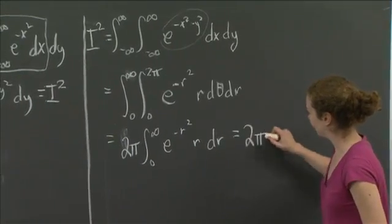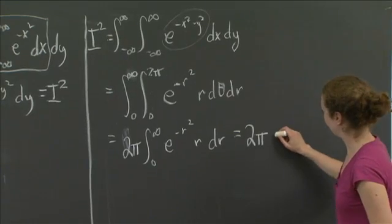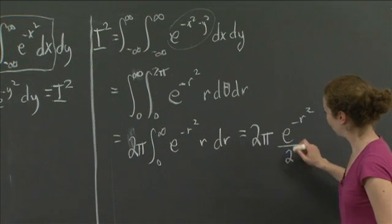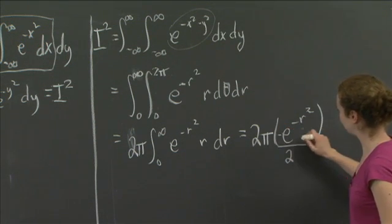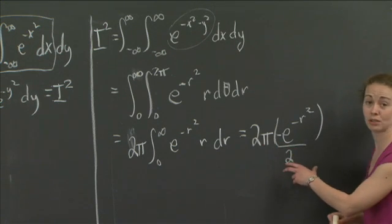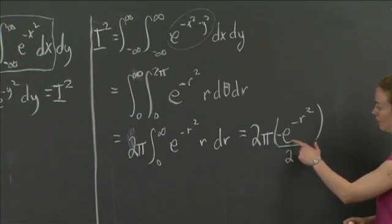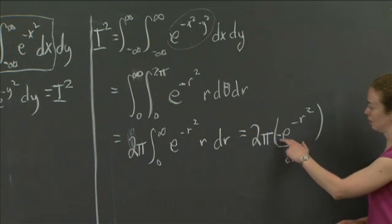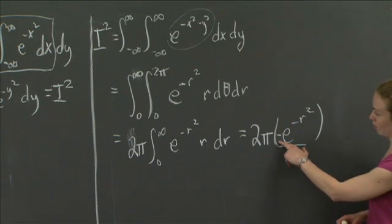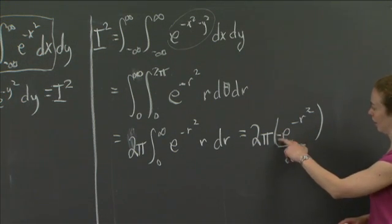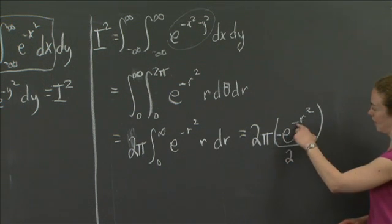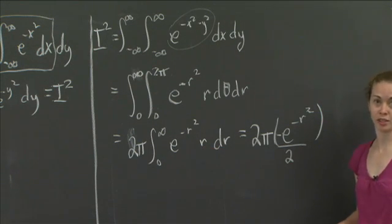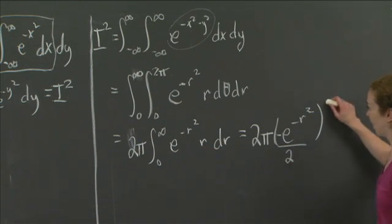We should get an antiderivative of negative e to the minus r squared over 2. Let me verify: when I take the derivative of negative e to the minus r squared over 2, I get a factor of negative 2r from the chain rule. The negatives cancel and the 2's divide out, giving me e to the minus r squared times r — which is exactly what we needed. So that's correct, and now I need to evaluate at the bounds.